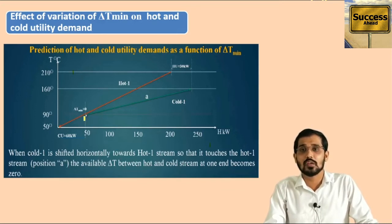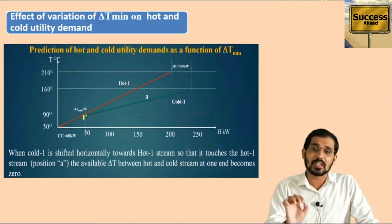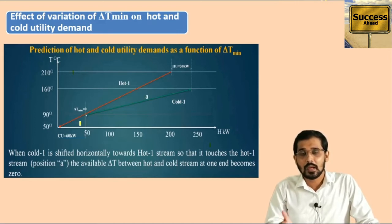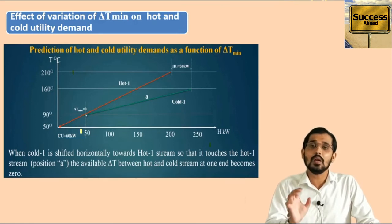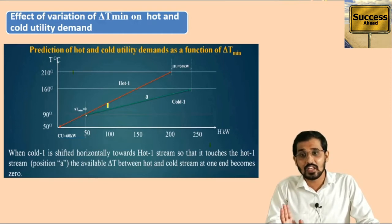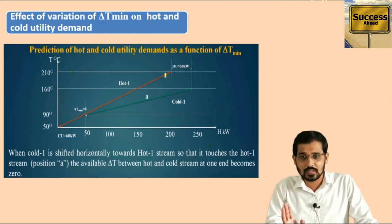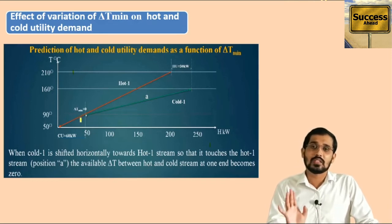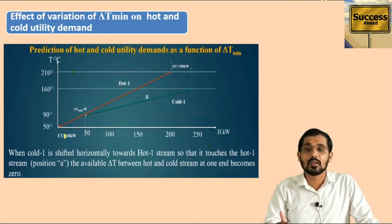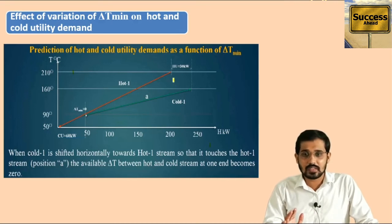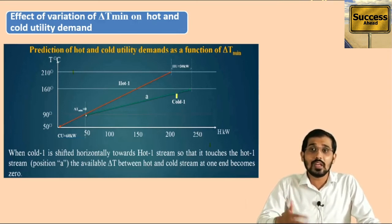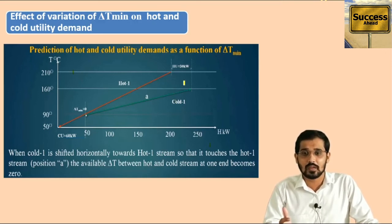This extra part of the hot stream in the bottom section requires extra cold utility to extract heat from it, because no cold stream is available in that section. We can exchange heat between cold and hot streams only in the overlapping area. Beyond that overlap, there is no cold stream available. So to remove excess heat from this extra part of the hot stream, extra cold utility is required — that is nothing but Cu, and its value is 60 kilowatts.